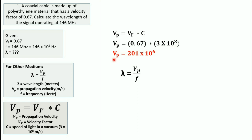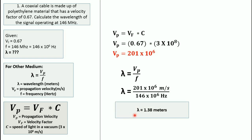Now that we have the propagation velocity, we can solve for the wavelength. Wavelength equals vp over f: 201 times 10 raised to 6 meters per second divided by 146 times 10 raised to 6 hertz, which gives 1.38 meters. So the answer for the wavelength of a signal operating at 146 MHz through this coaxial cable is 1.38 meters.